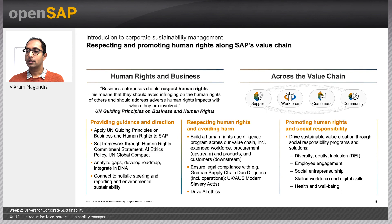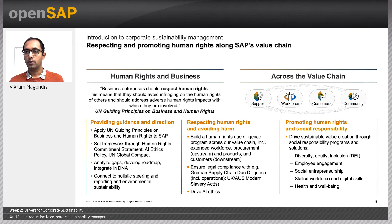Corporate KPIs like diversity, equity and inclusion, employee engagement, and health and well-being form the basic KPI framework to ensure that social sustainability targets and achievements are measured in a consistent manner. Unit 6 of this week will cover this topic in more detail.